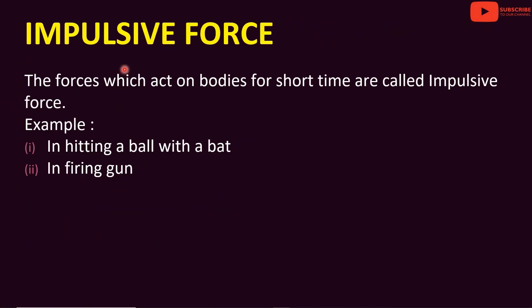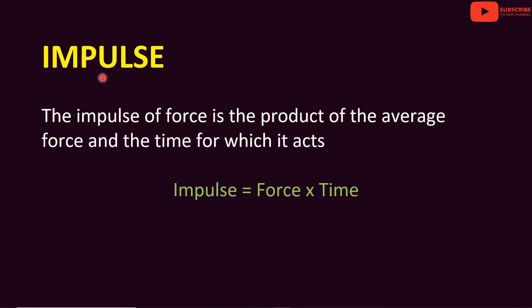We call the impulsive force. The forces which act on bodies for a short time are called impulsive forces. Examples include hitting a ball with a bat and firing a gun. The impulse of the force is the product of the average force and the time for which it acts — that is, force into time. We call this the impulse.